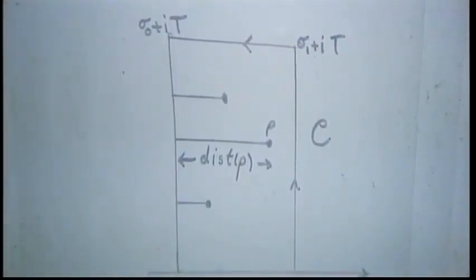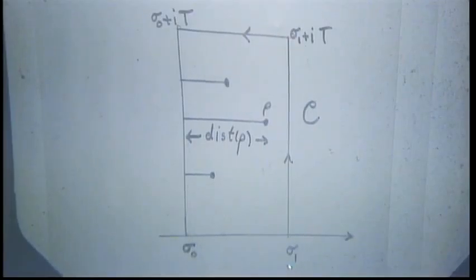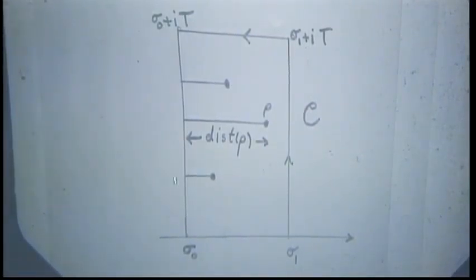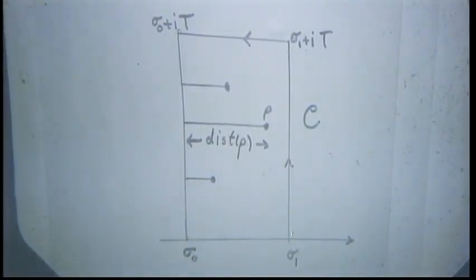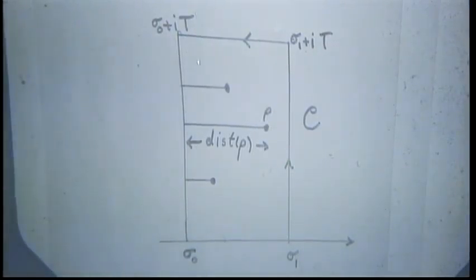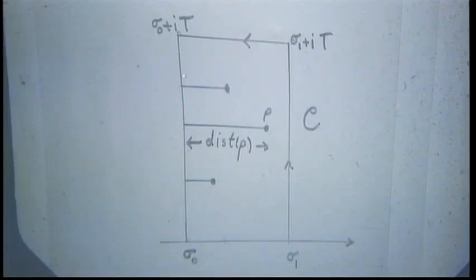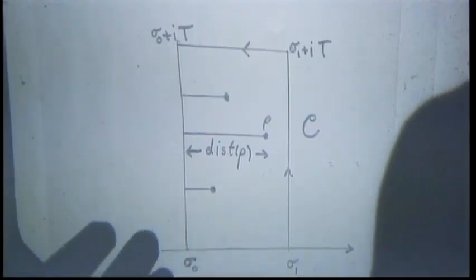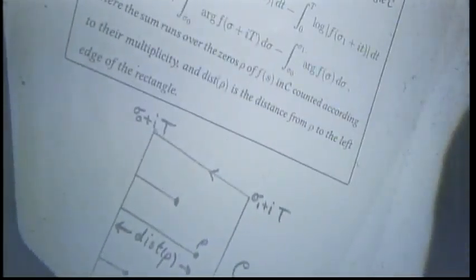If F is analytic and non-zero on a rectangle — meaning analytic in an open set containing that rectangle — then 2π times the sum of the distances of the zeros of F inside to the left edge equals the integral of log F on the left edge, minus the integral on the right edge, plus terms from the top and bottom of the rectangle. So integrating log F along the sides and taking imaginary parts gives this expression, equal to 2π times the sum of those lengths where the rho's are zeros inside the rectangle.